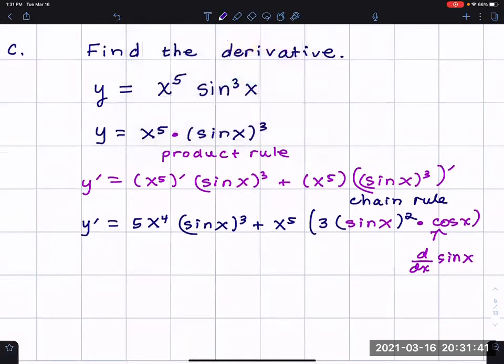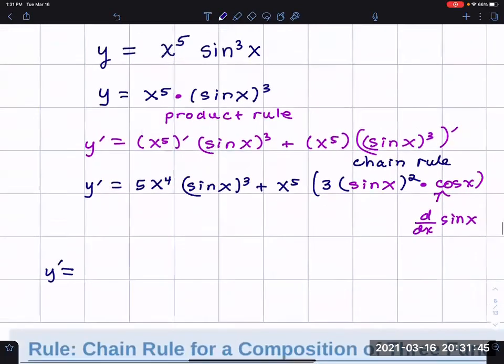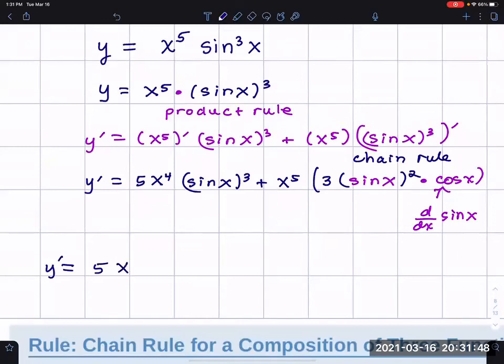That's a lot of stuff. Now I just have to simplify this without getting it all wrong. I have five x to the fourth sine to the third power x. Then three times x to the fifth I'll put up front, then I'll have sine squared x cosine x.